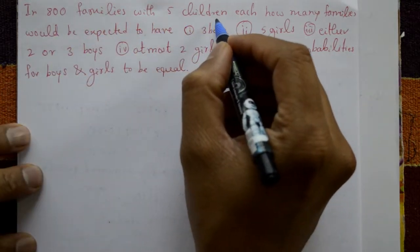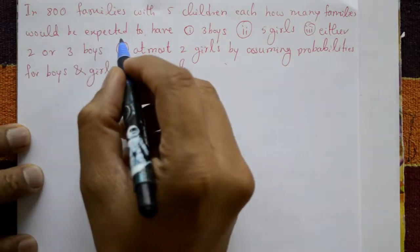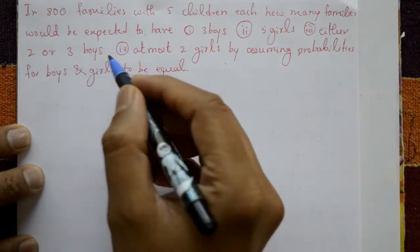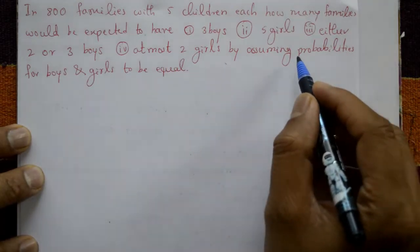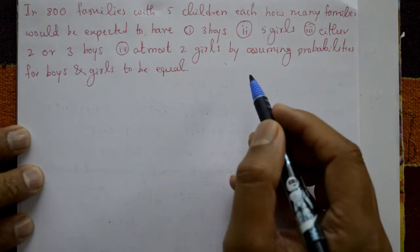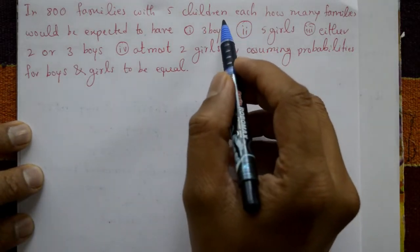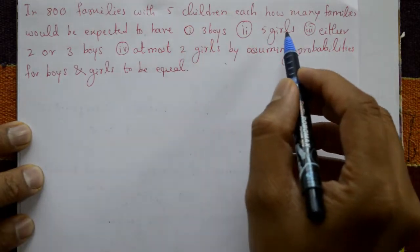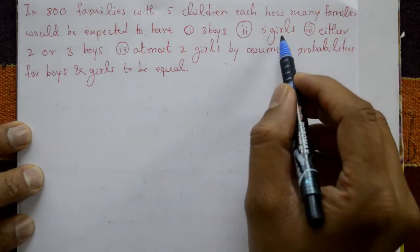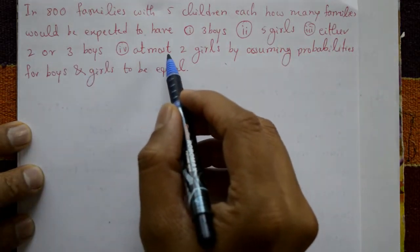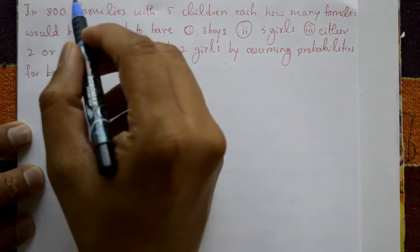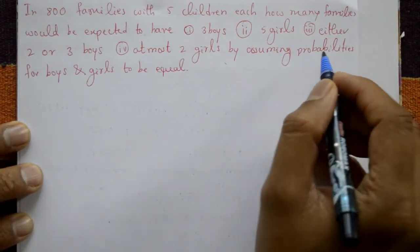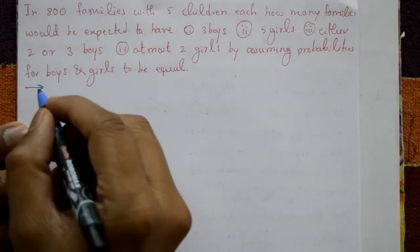In 800 families with five children each, how many families would be expected to have: Case 1 - three boys; Case 2 - five girls; Case 3 - either two or three boys; Case 4 - at most two girls? This is given by assuming probabilities for boys and girls to be equal.